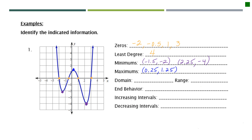The domain is always going to be all real numbers for every single polynomial graph, so I'll just write all real numbers since it goes left and right forever. The range is a different story — it's talking about all the possible y-values. Since the graph goes up forever, I want to identify the lowest point it ever gets to, which is negative 4. So the range is everything greater than negative 4.